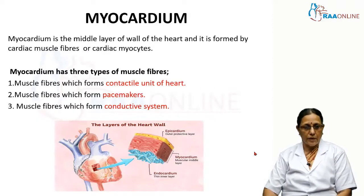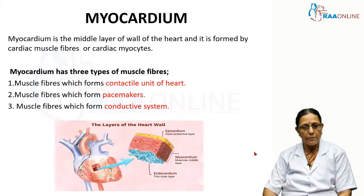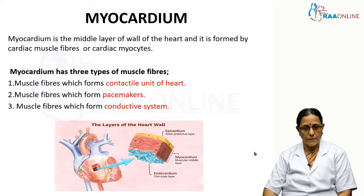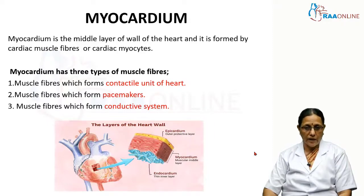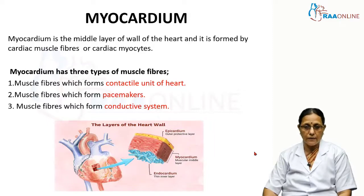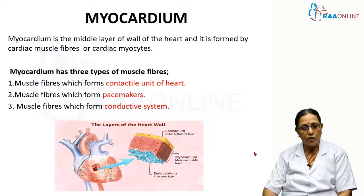The myocardium is the middle layer of the wall of the heart. The wall of the heart comprises three layers: the epicardium, the myocardium, and the endocardium. This middle layer is formed by cardiac muscle fibers or cardiac myocytes. The myocardium has three major functions: muscle fibers form the contractile unit for contraction of the heart; other muscle fibers form the pacemakers to start the impulse in the cardiac cell; and muscle fibers which form the conductive system to carry on the impulses.